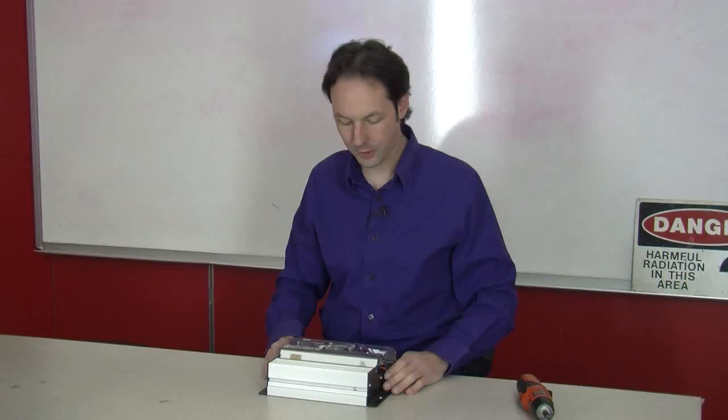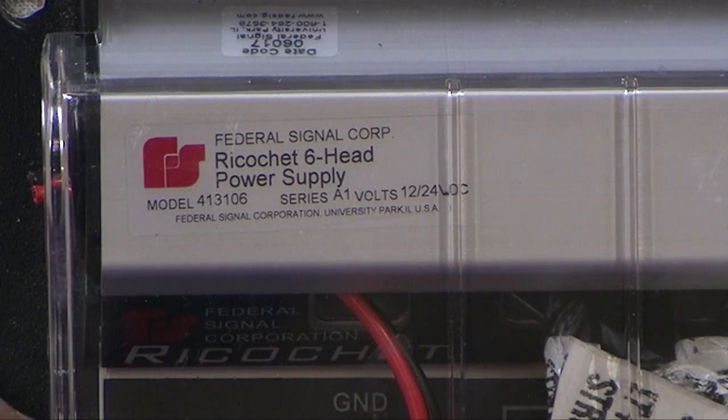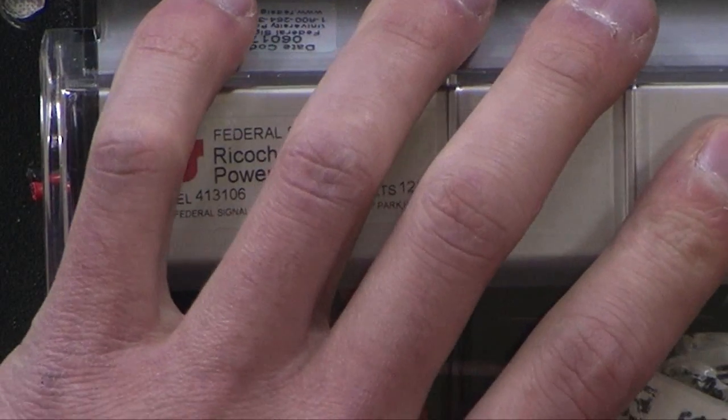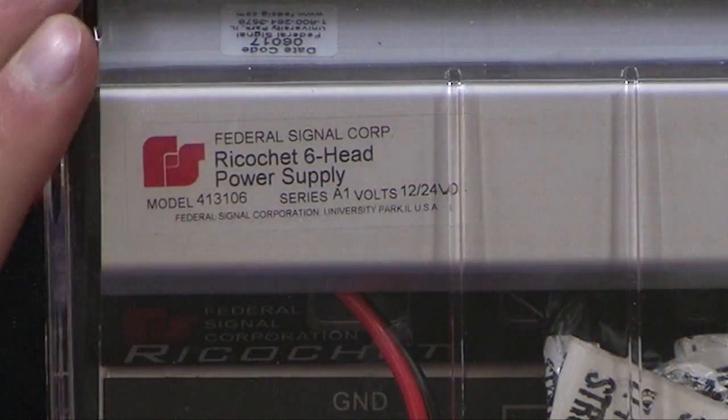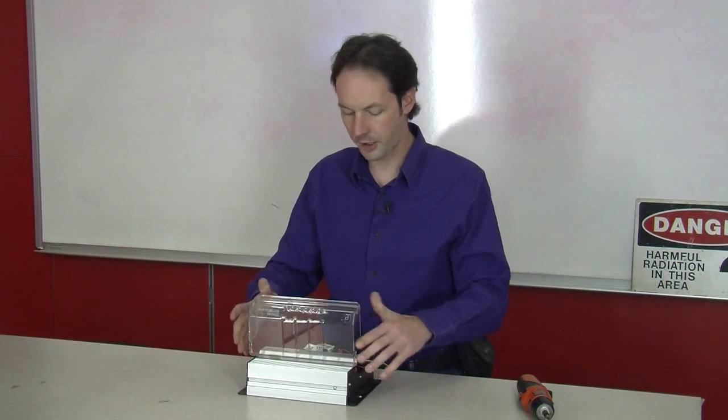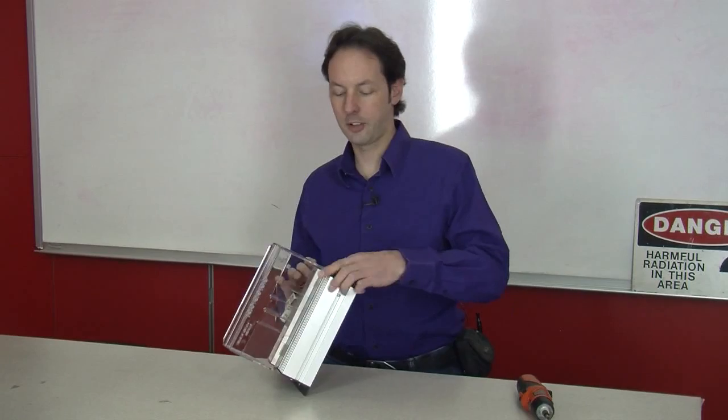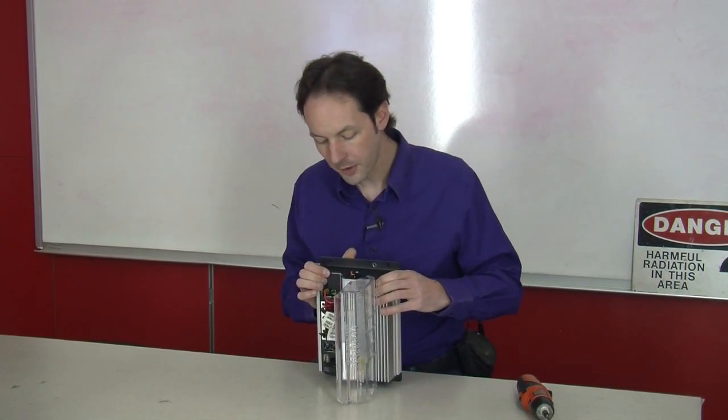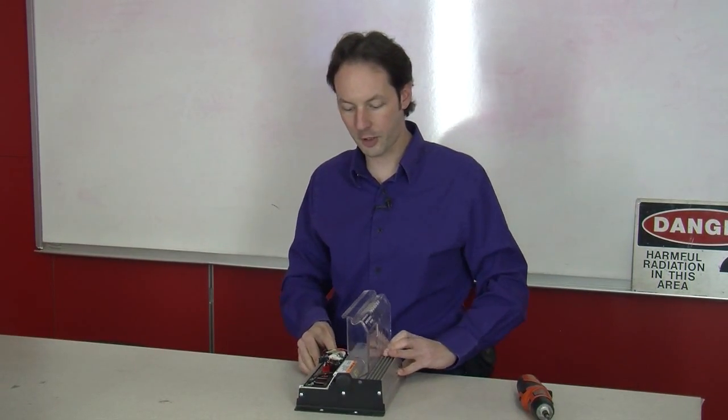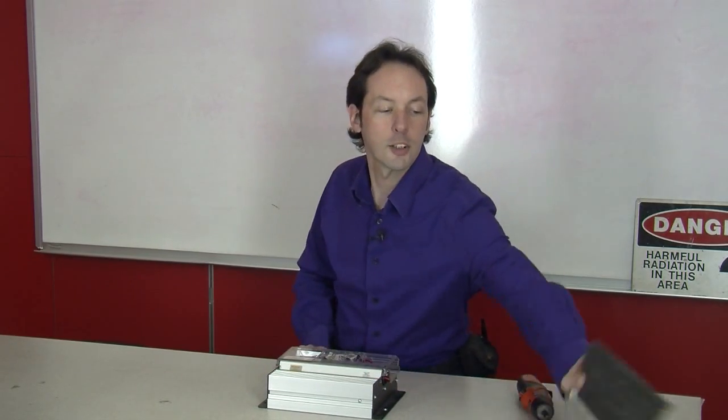All right, so now we're going to take a look and compare that to the Federal Signal Ricochet 6 head power supply 413106. They never name these cool things, you never hear it named Cletus or something like that. Federal Signal, next model should be named Cletus.